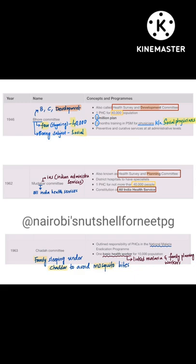Coming to Mudlaya — the second committee. In the name 'Mudlaya' you have 'ALI' in the middle, so All India Health Services (A-L-I), and 'IA' also stands for Indian Administrative Services. So it deals with All India Health Services based on Indian Administrative Services. This is otherwise called the Health Survey and Planning Committee. It also deals with 40,000 population for one PHC.